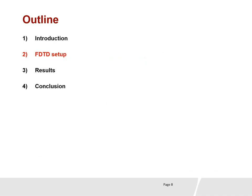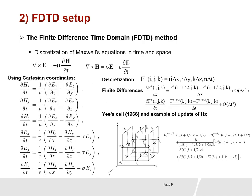Moving to the FDTD setup. This is FDTD, which we are familiar with. FDTD is based on discretization of Maxwell's equations in time and space, and the Yee cell is used to locate different components of the electric and magnetic field in 3D space.